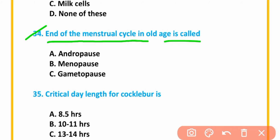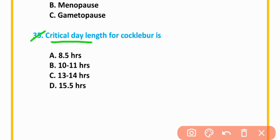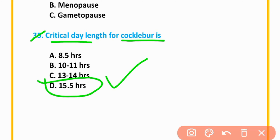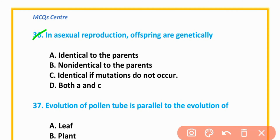MCQ number 34: End of the menstrual cycle in old age is called menopause. Option B is correct. MCQ number 35: Critical day length for the cochlea is 15.5 hours.